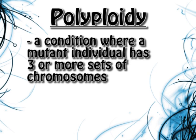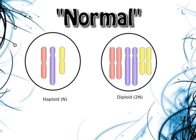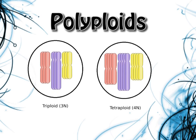The question was: what is polyploidy and associated ploidies? Simply put, it's a condition where a mutant individual has three or more sets of chromosomes. Normally, an organism would have either one or two sets of chromosomes, but in the case of polyploidy, you would have three or more. This is seen in plants, not in animals, and for reasons we'll get into soon.